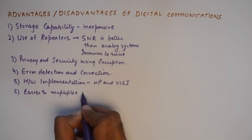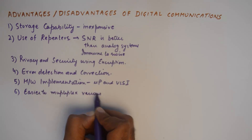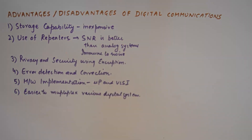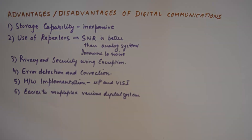The next advantage is that it is easier to multiplex various digital systems. Digital systems usually employ TDM, which is a far more efficient way of multiplexing than FDM, which is the main rationale behind analog multiplexing schemes. Moreover, the hardware required to implement multiplexing is relatively cheaper and easier to put into place.